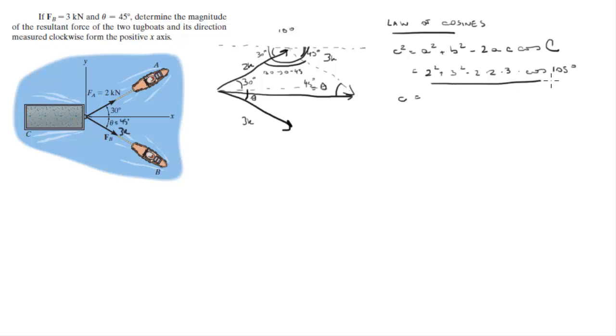Now, when you solve all this and you square root it, since there's a square on this side, you're going to get that C or our resultant force is equal to 4.013 kN.